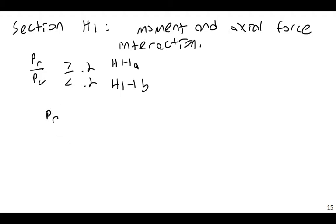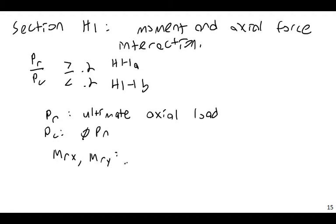And PC is basically your phi PN. And then you have two things for the moment: you have MRX and MRY. These are the demand moments, the M ultimate in the strong and weak direction. So if you're doing a building that has wind coming from each direction, you would calculate the X and then you'd calculate the Y, and you'd combine them together in the equations they're in.